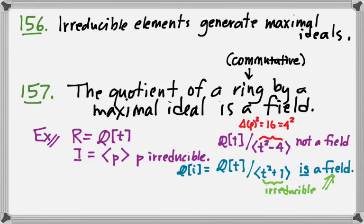But if we wanted to be even more explicit, to guarantee that t squared minus 4 is not irreducible, we just have to produce a factorization in which neither factor is a unit.